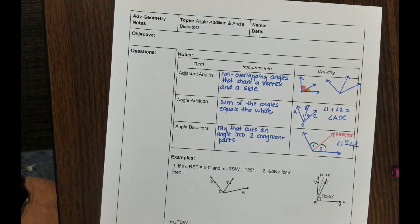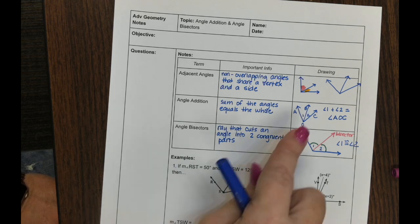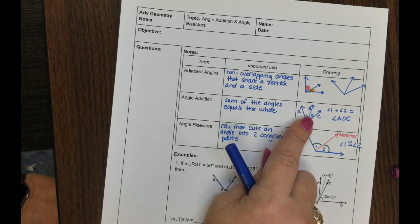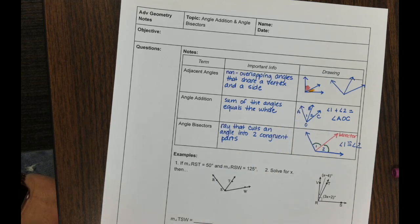The angle addition postulate is similar to the segment addition postulate, where the sum of the segments equals the whole segment. The same thing happens with angles: the sum of the parts equals the whole. So angle 1 plus angle 2 — those two adjacent angles added together — equal the whole big angle.